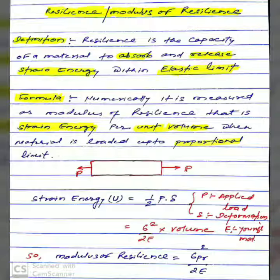The relation for the modulus of resilience will be proportional limit stress squared divided by 2E (σ_PL²/2E).